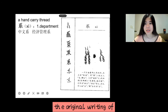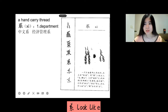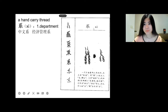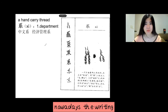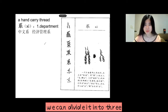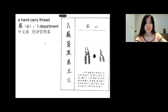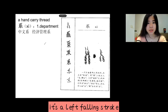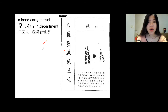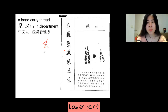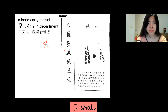The original writing of 系 looks like a hand carrying thread. Nowadays, the writing can be divided into three parts: upper, middle, and lower. The upper part is a left-falling stroke. The middle part is a silk. The lower part is 小, meaning small.